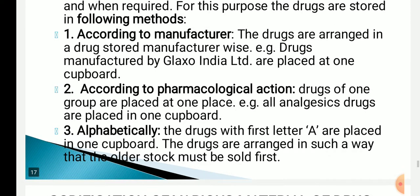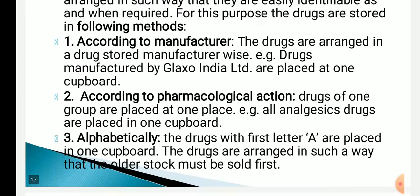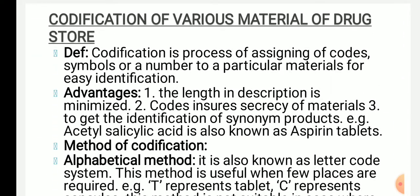According to pharmacological action means drugs are stored based on their mechanism of action. Alphabetically means drugs are arranged from A to Z — drugs starting with A come first, then B, and so on. Storage methods are: according to manufacturer, according to pharmacological action, and alphabetically.